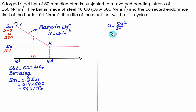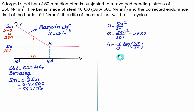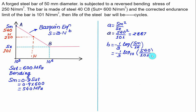First, evaluate constant A. A = SM² / SE = 540² / 101. Solving this gives constant A = 2887. Now find constant B = −(1/3) × log₁₀(SM / SE) = −(1/3) × log₁₀(540 / 101). Remember to use base 10 for the logarithm. You will get B = −0.2427.